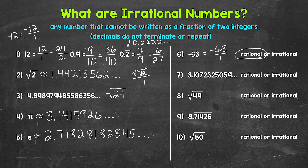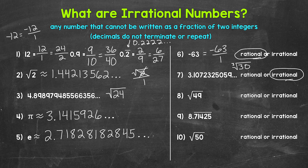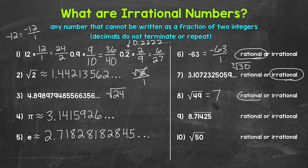The decimal 3.10723... is actually what we get for the cube root of 30, so this is irrational. Next, let's move on to number 8, where we have the square root of 49. Now, 49 is a perfect square, so the square root of 49 equals 7. So the square root of 49 is rational.